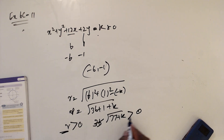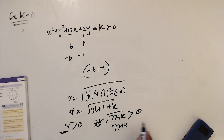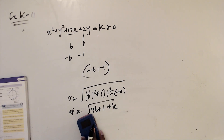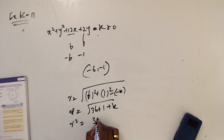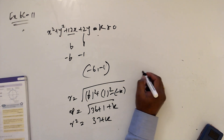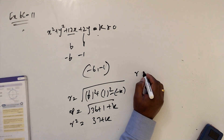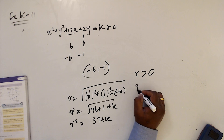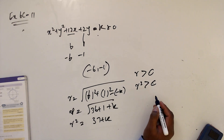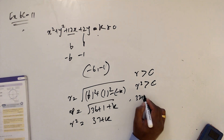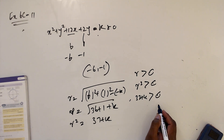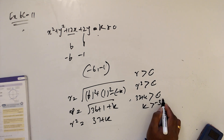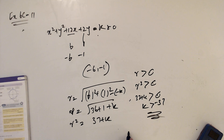So r squared equals 37 plus k. Since r should be greater than 0, r squared should be greater than 0 as well, meaning 37 plus k greater than 0, which means k must be greater than minus 37.